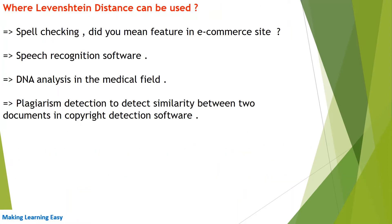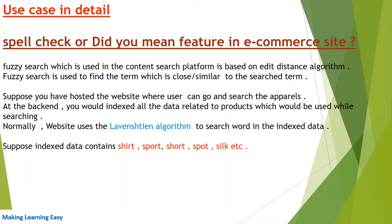In general, this algorithm is widely used in information retrieval applications. Levenshtein distance can be used in spell checking, the 'Did you mean' feature in e-commerce sites, speech recognition software, DNA analysis in the medical field, plagiarism detection to find similarity between two documents, and copyright detection software. Now let's see one use case in detail.